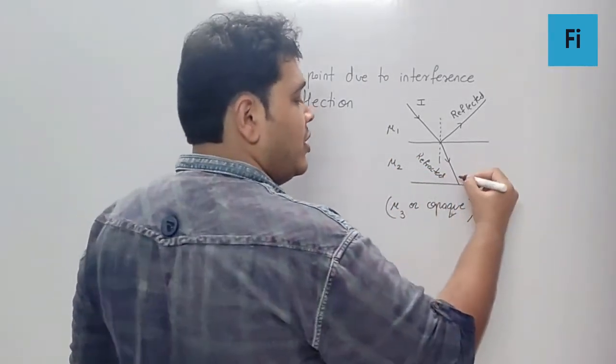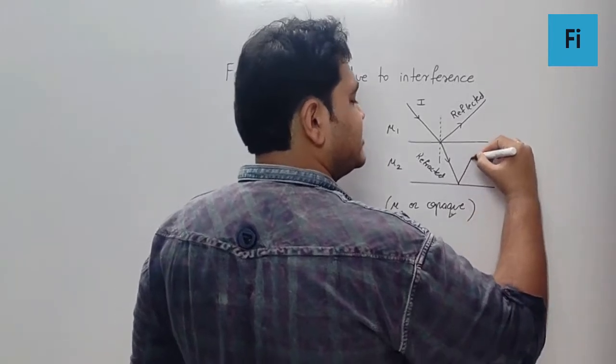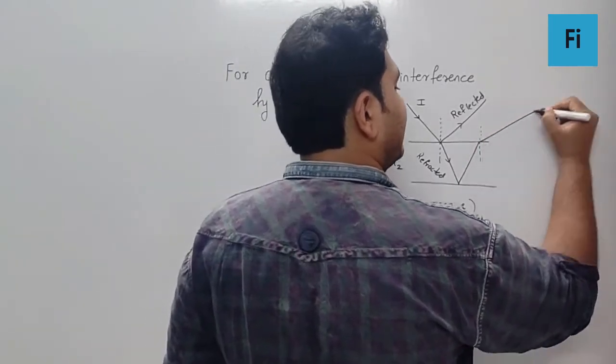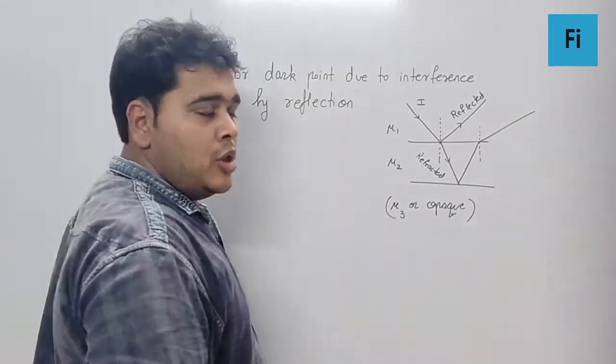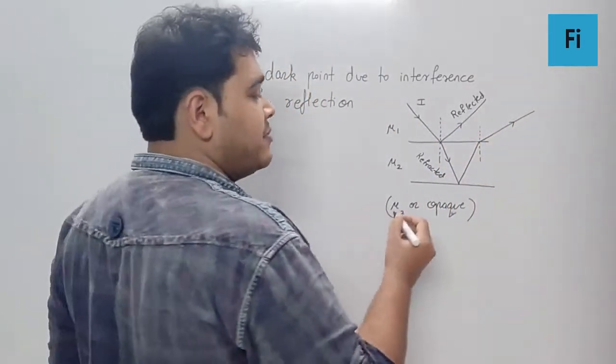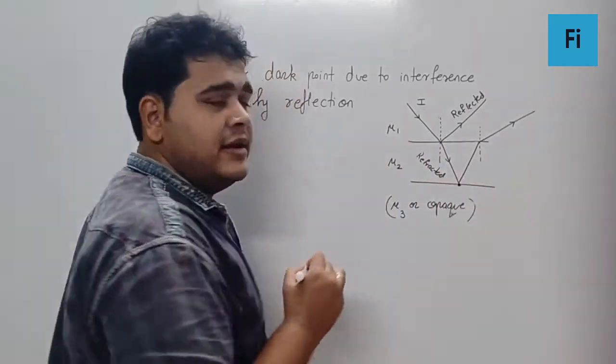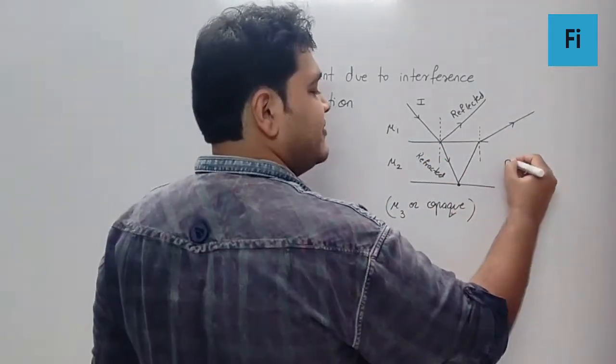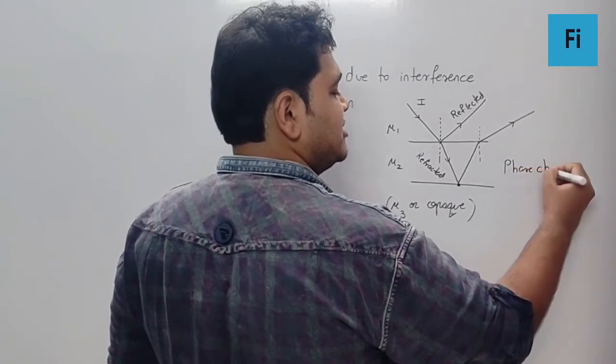Now here there will be a second reflection. Because of the second reflection, there is going to be interference between these two waves. And because it has been reflected from a denser boundary, I can say there is a phase change of π or 180 degrees.